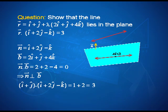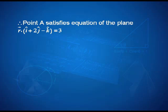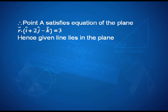Here, vector n = i + 2j − k and vector b = 2i + j + 4k. Their dot product gives 0, so the line is perpendicular to the normal — but it could still be parallel to the plane, away from it. Further, taking the point (i + j) which lies on the line and substituting into the equation of the plane, I get the dot product equal to 3. This confirms that the point of the line is also a point of the plane, and therefore the given line lies in the plane.